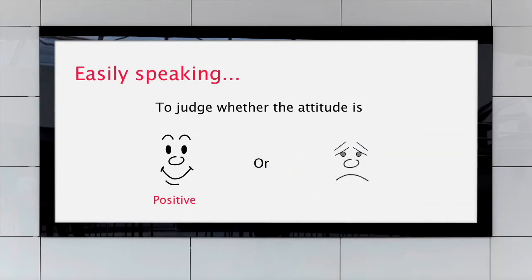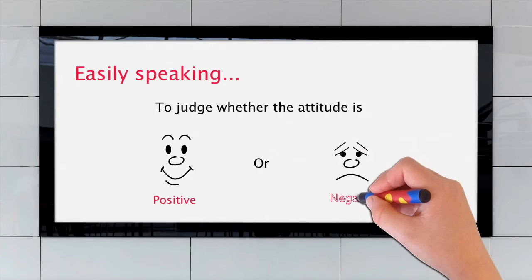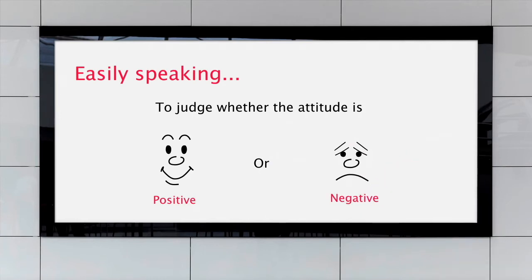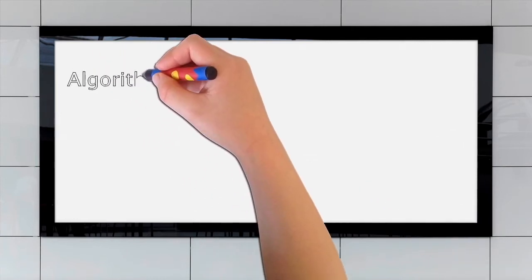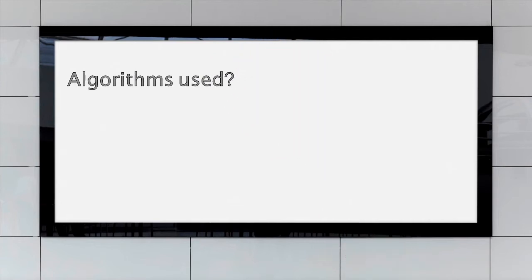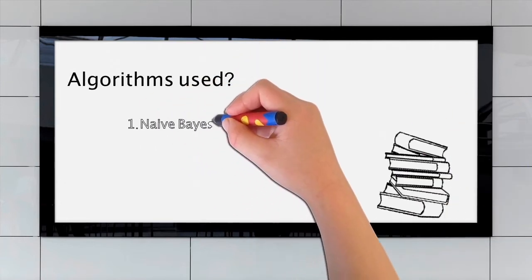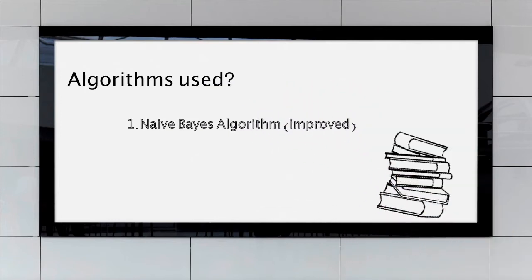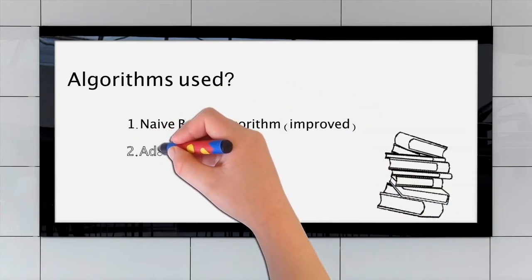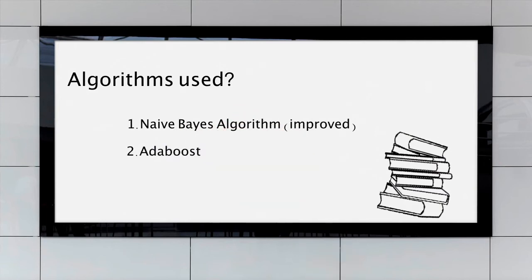Really, it's so easy. Our project, what algorithms are used? There are two algorithms. First one is Improved Naive Bayes, and the other one is Adaboost.